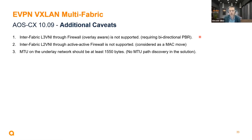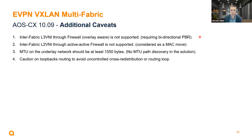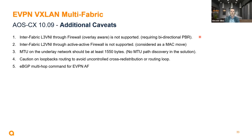Some prerequisites: the MTU should be 50 bytes higher than the minimum frame size of your inner traffic. Avoid uncontrolled cross-redistribution to prevent routing loops when doing OSPF to BGP and BGP to OSPF. The eBGP multi-hop command for the eBGP EVPN address family is important because those sessions do not follow the underlay connectivity — they are between loopbacks, so routing the loopback correctly is key.